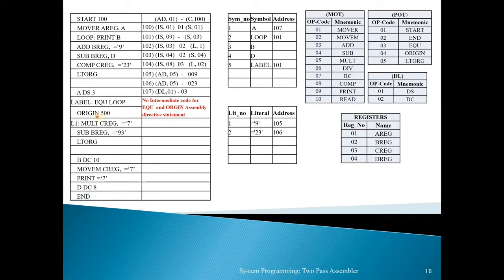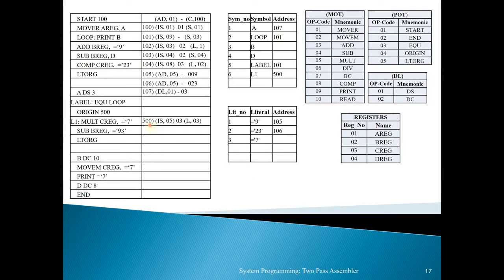For EQU and ORIGIN statements, no intermediate code is generated. Using the ORIGIN statement, the location counter is reset to 500 — 'ORIGIN 500' means LC becomes 500. The next statement is 'L1 MUL CREG, =7': L1 is a label entered into the symbol table, MUL is at position 05 in the MOT, CREG is at register position 03, and =7 is entered into the literal table. LC is now 500, so intermediate code: 500 (IS, 05) (03) (L, 03).